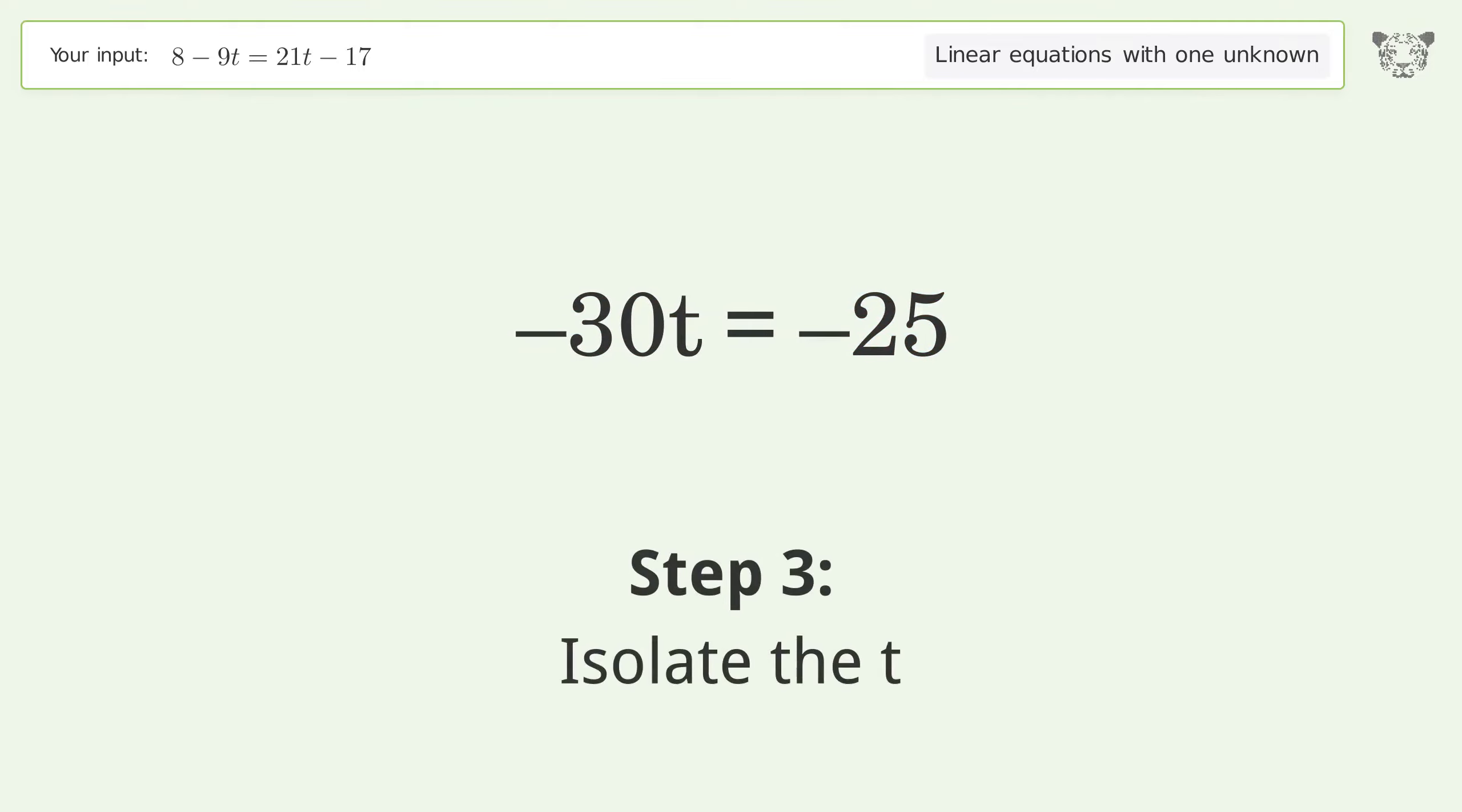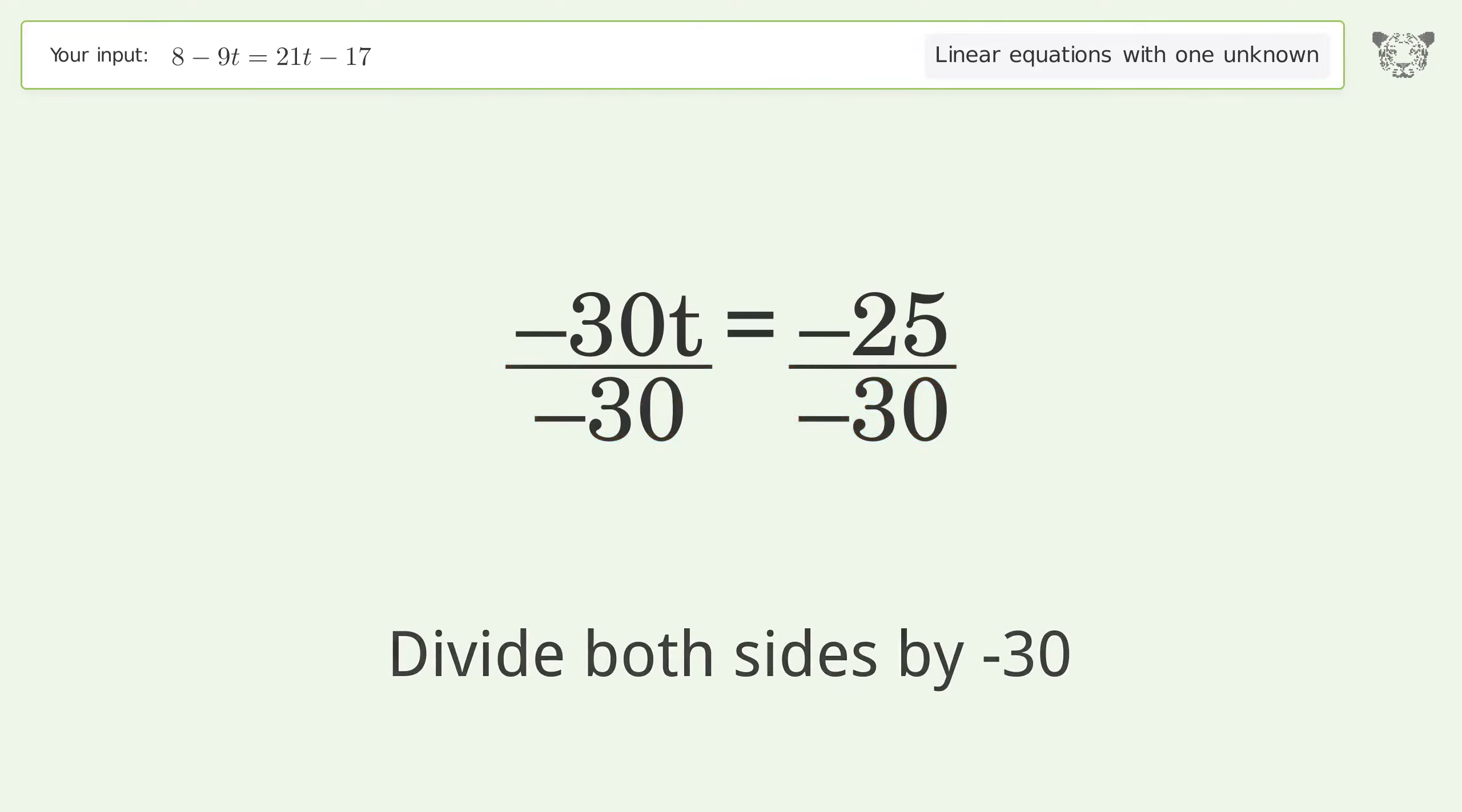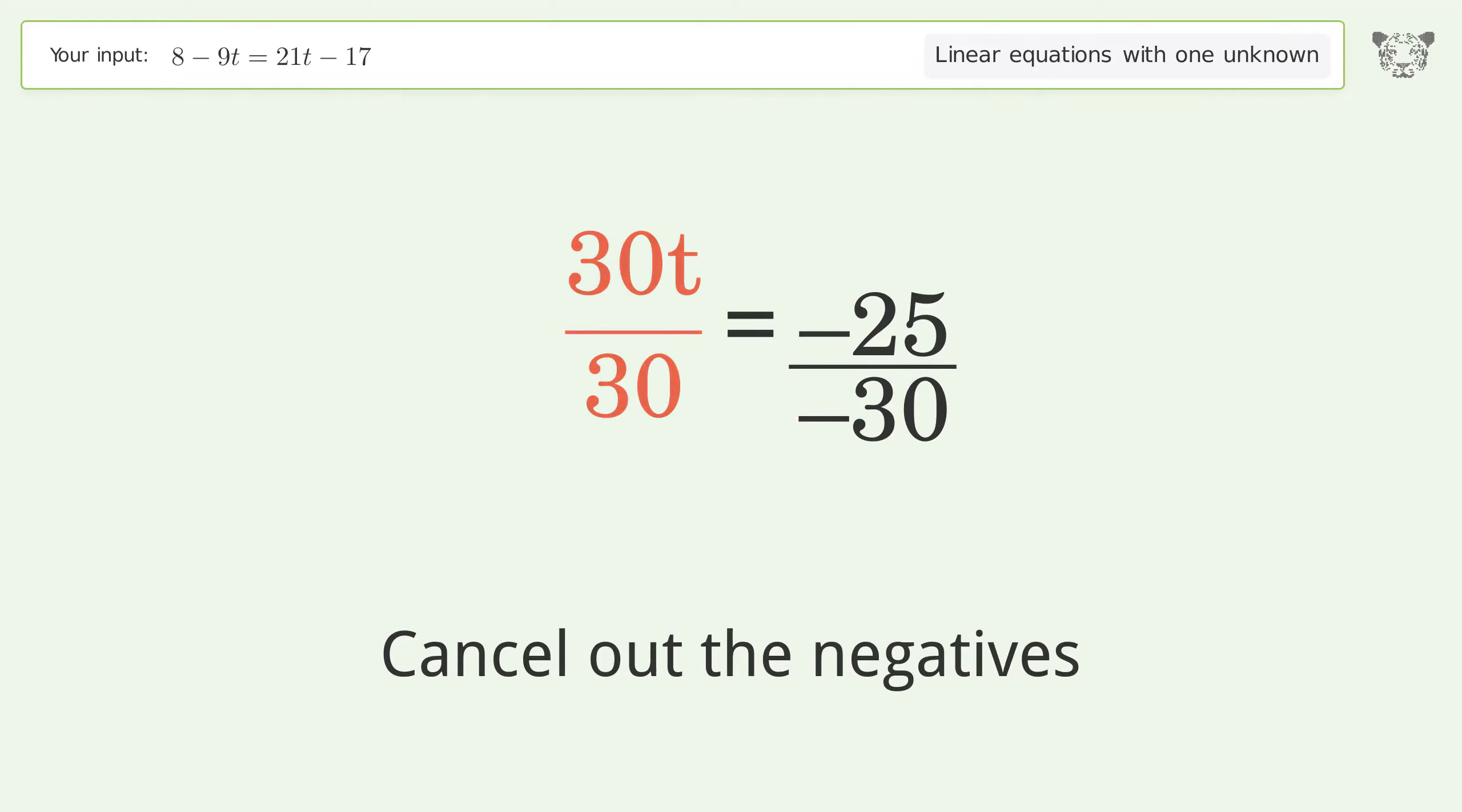Isolate the t. Divide both sides by -30. Cancel out the negatives. Simplify the fraction.